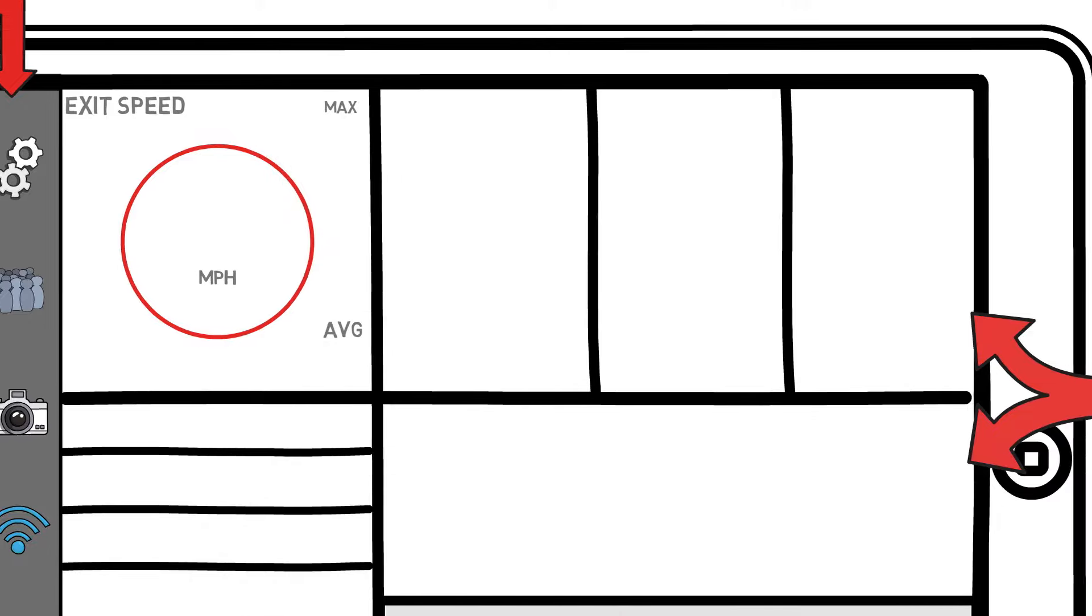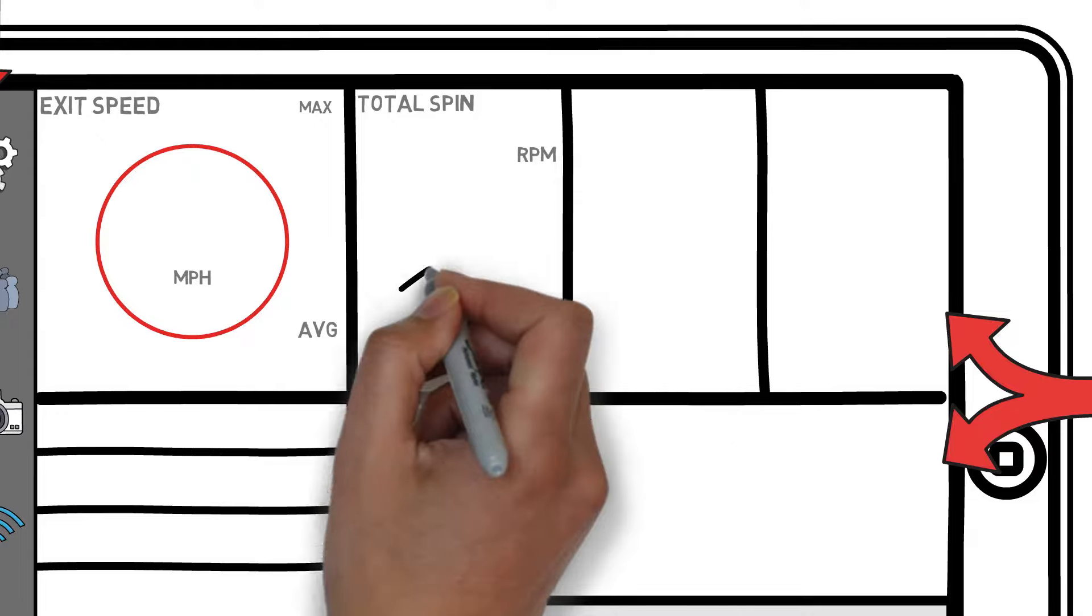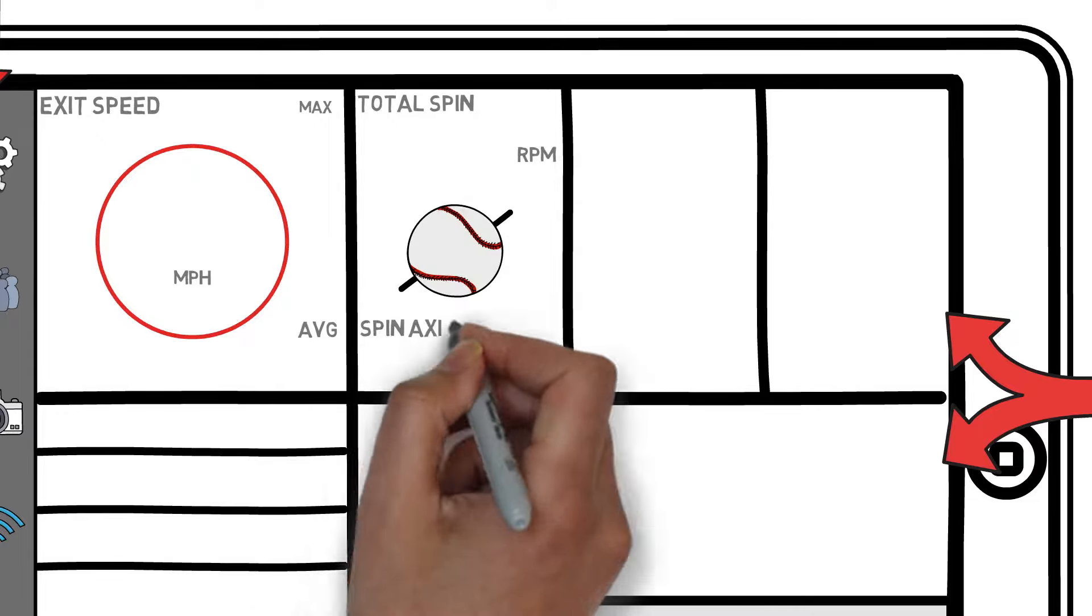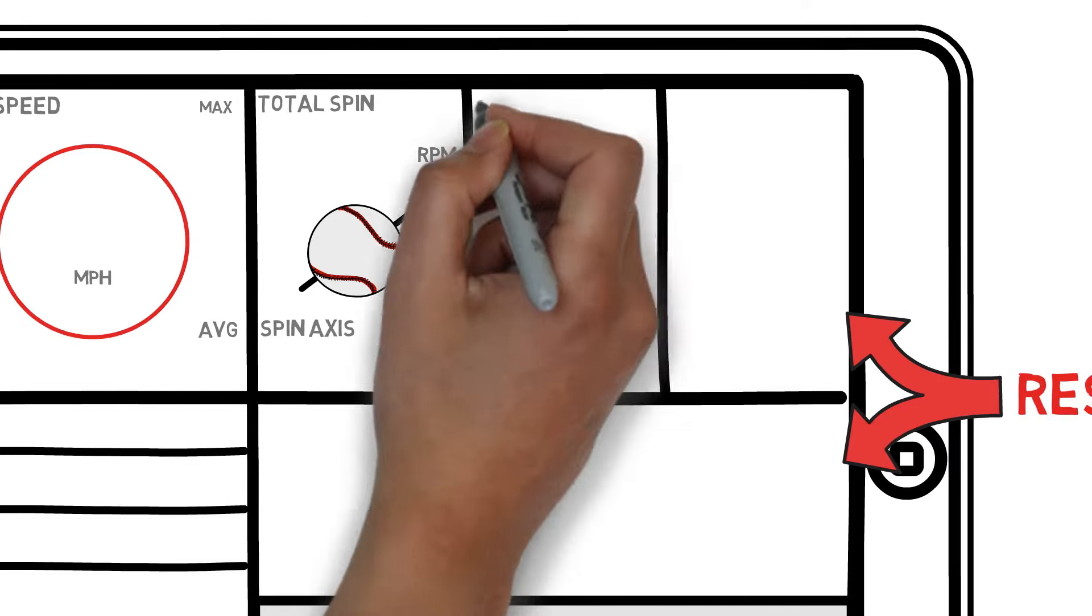Sliding to the right, you'll see the spin information tab. This hosts your total spin rate, spin axis, and any animation of these two things put together. We will dive deeper into what that means in a minute.